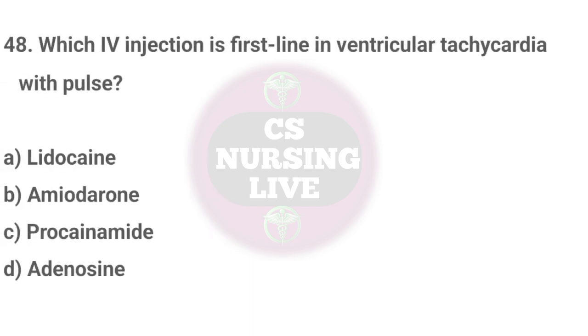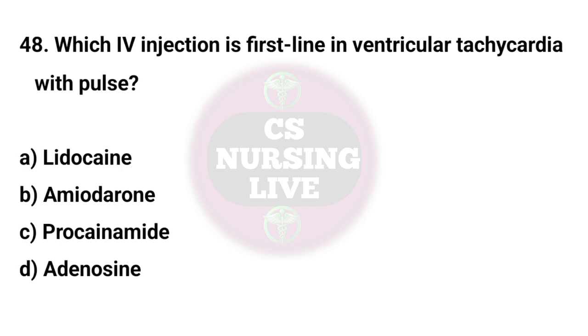Question No. 48. Which IV injection is first-line in ventricular tachycardia with pulse? Right answer is D. Amiodarone.